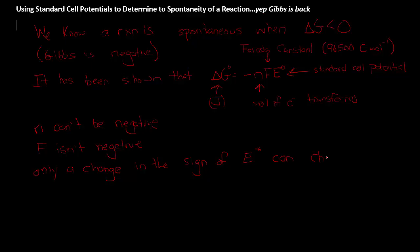So if we have a situation where E naught is positive, the negative that appears in the negative nFE side of the equation is going to take care of the negative value of delta G. So when E naught is positive, delta G is negative, the reaction is spontaneous.